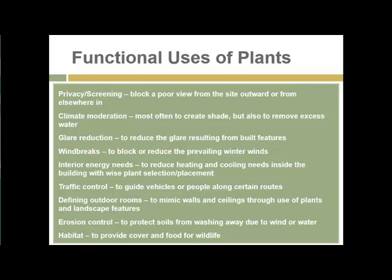An increasingly important part of the sustainable horticulture movement is providing cover and food for wildlife. This includes pollinators such as bees and hummingbirds, and important wildlife corridors for butterflies, dragonflies, and other animals — so that as natural areas continue to be broken up and degraded, these animals will have a place to go and an avenue to travel between areas where they can reproduce and thrive.